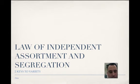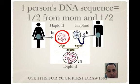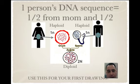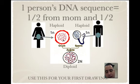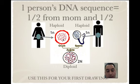These two things are the keys to variety. One person's DNA sequence is really half from mom and half from dad. From the female, ovary cells go through meiosis to make egg cells, which have half the original amount that she had in her body cells. So instead of 46, she puts half — 23 chromosomes — making it haploid.